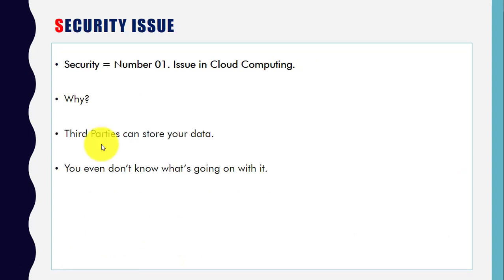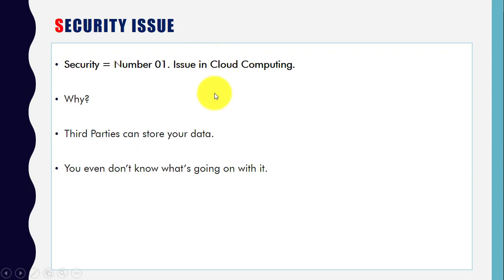Next is security issues. Security is the number one issue in cloud computing. Why? Because third parties can store your data without your permission, and you don't even know what's going on with your data. That's why security is the number one issue — anybody can access your data without your permission.